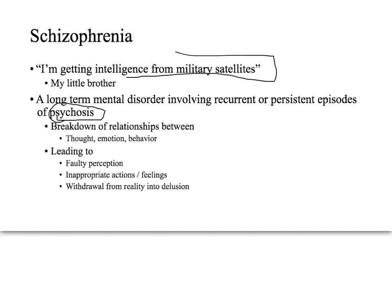The term psychosis is an umbrella term and there are many causes — about ten different causes. In general, schizophrenia is a long-term mental disorder characterized by recurrent or persistent episodes of psychosis, involving a breakdown of relationships between thoughts, emotions, and behaviors. This leads to an altered perception of reality, inappropriate feelings, inappropriate actions, and a withdrawal from reality into delusion.